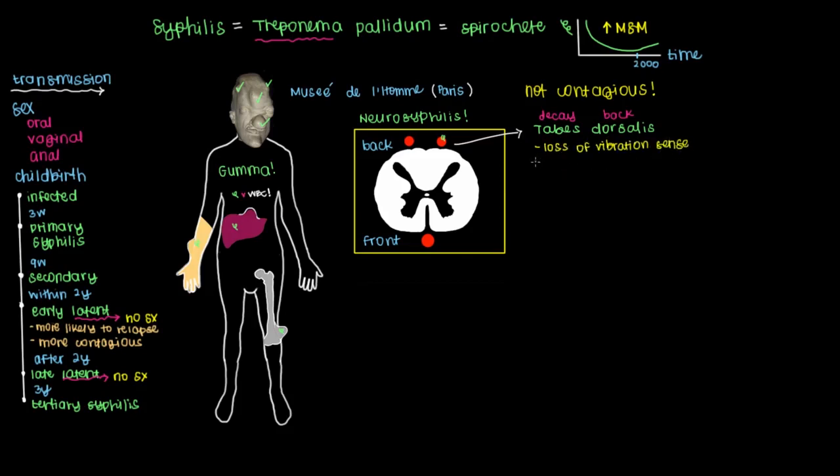So if we have a decay in the back, you can have a loss of vibration sense. The other thing the back of the spinal cord is responsible for is position sense, which lets you know where your body parts like your hands and your arms are relative to space. And another term for that is proprioception.